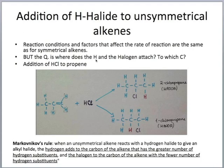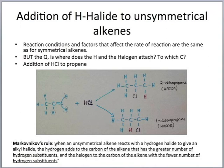The main question is: where does the hydrogen and the halogen attach — to which carbon? Let's take the example of hydrogen chloride reacting with propene. There are two possible products, so how do we know which is the major and which is the minor product? There is a rule called Markovnikov's rule, which states that when an unsymmetrical alkene reacts with a hydrogen halide, the hydrogen adds to the carbon of the alkene that has the greater number of hydrogen substituents. In propene, one carbon has only one hydrogen and the other has two, so the hydrogen will attach to the carbon with two hydrogens.